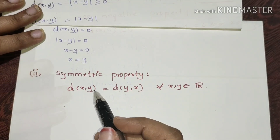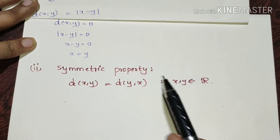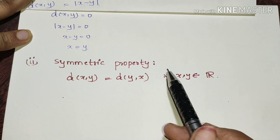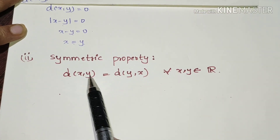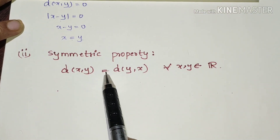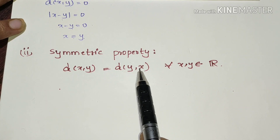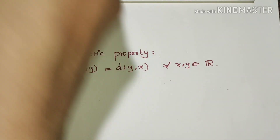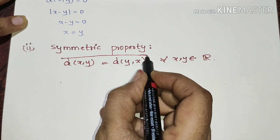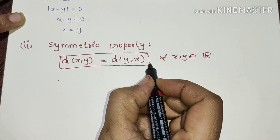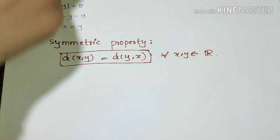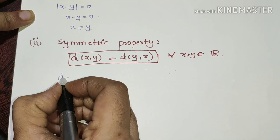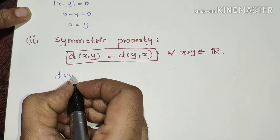Now we have the second property — the symmetric property. The symmetric property states that the distance of x, y is equal to the distance of y, x. This is the second property.